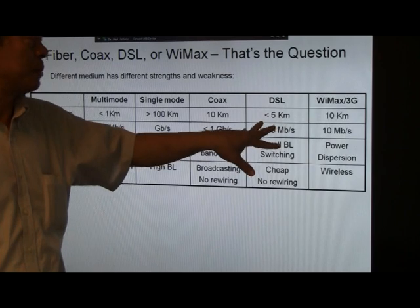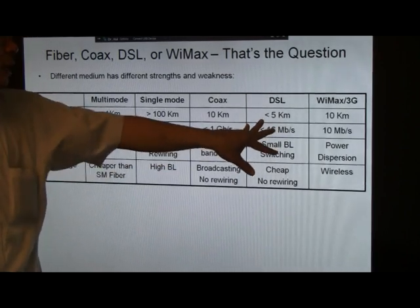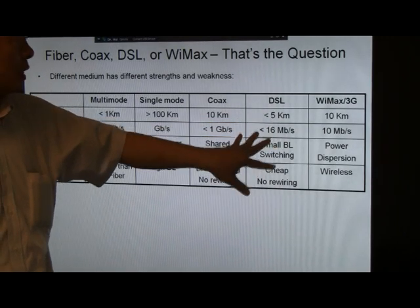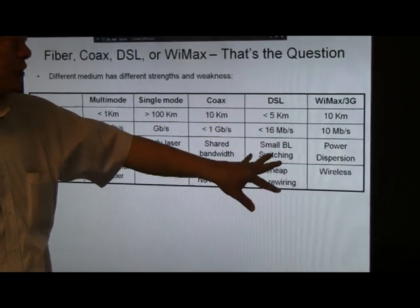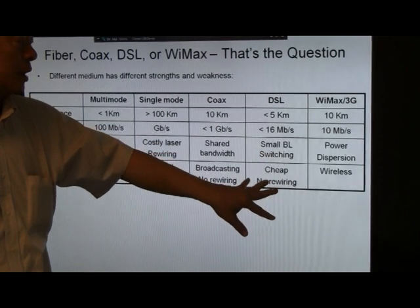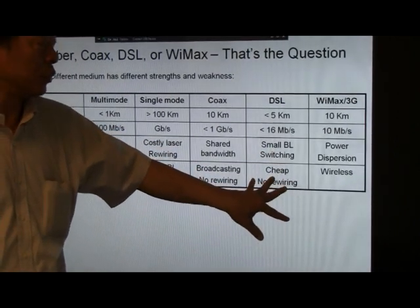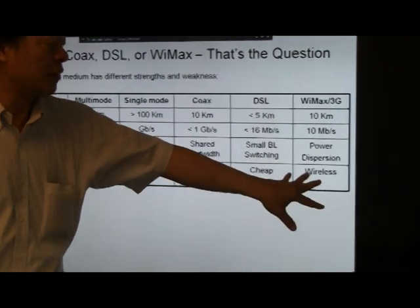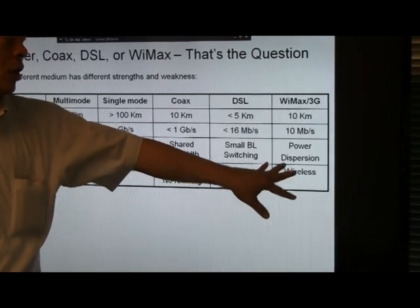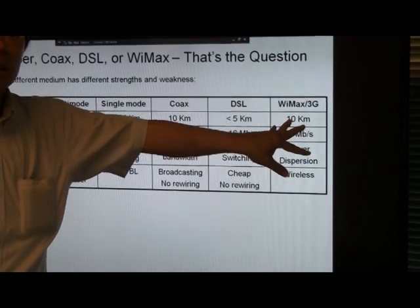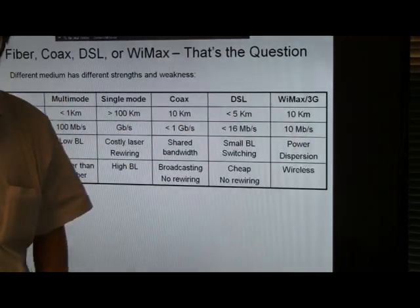DSL, using a twisted pair, the distance traveled is way smaller than single-mode fiber at five kilometers, 16 megabits per second, and you have a small BL product. You also need switching, but the huge advantage is that you don't need rewiring. Whereas for wireless, obviously, it's no wiring at all, but there's a huge power dispersion problem, and also the distance as well as the data rate tend to be smaller.